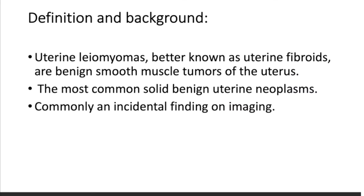What is uterine fibroid? The medical term of uterine fibroid is uterine leiomyomas. It is simply a benign smooth muscle tumor of the uterus. It is also the most common solid benign uterine neoplasm, commonly an incidental finding on imaging.